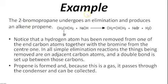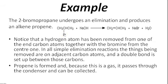For example, 2-bromopropane undergoes elimination and produces the alkene propene. This is 2-bromo — why is it called 2-bromo? Because the bromine position is at the second carbon. It is also called a secondary halogenoalkane.